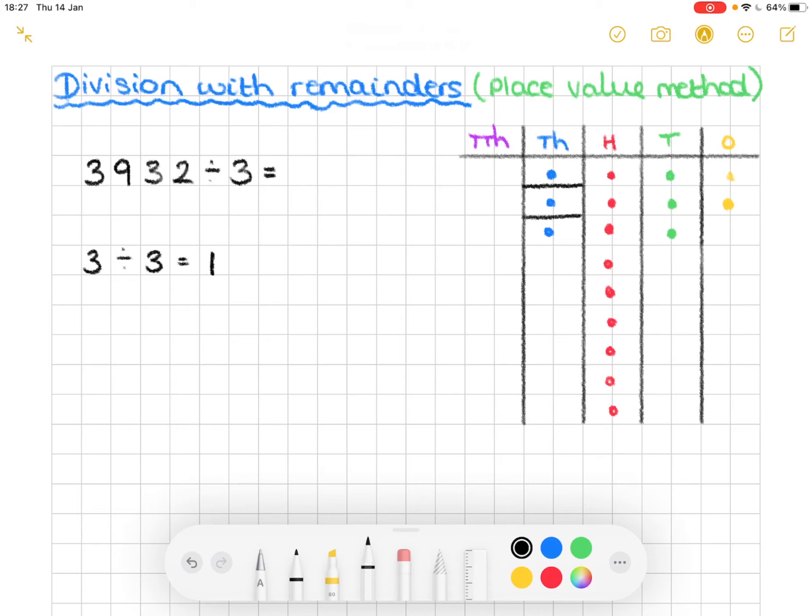Then we come to the hundreds column. So we've got nine. Divide that by three. We know that nine divided by three is three. So we know we need three dots in each group. And we have three equal groups.